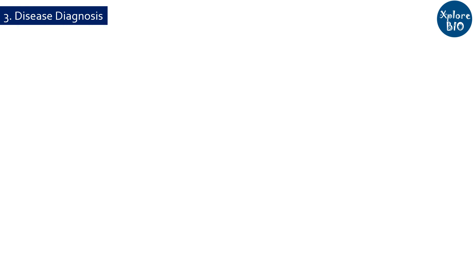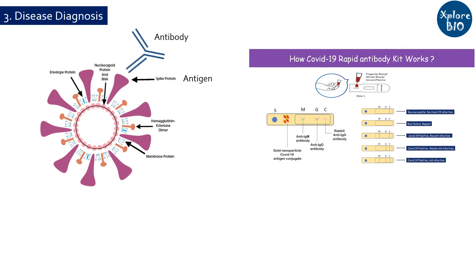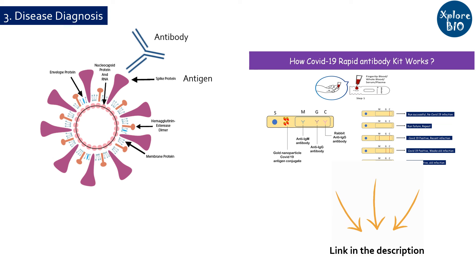The technology can also be used for disease detection. For example, ELISA kits use antibodies to detect disease-causing antigens such as the COVID-19 spike protein. The antibodies used for making ELISA kits are developed through Recombinant DNA technology. Often, enzyme-conjugated antibodies are used that generate color upon antigen binding for quick and easy detection of disease.